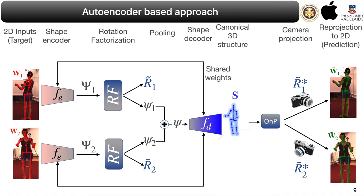Thus, in this work, we constrain the neural shape prior approach with a view equivalence assumption — namely, that multiple simultaneous views correspond to a single shape — thus preserving the benefits of both multi-view and neural prior approaches within the proposed framework. To our knowledge, this paper is the first effort applying neural priors to multi-view non-rigid structure from motion.